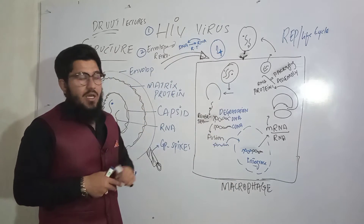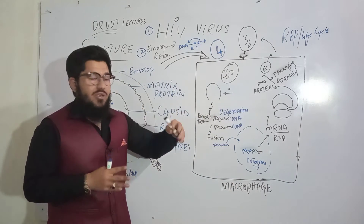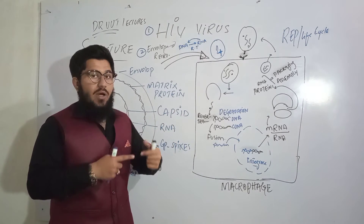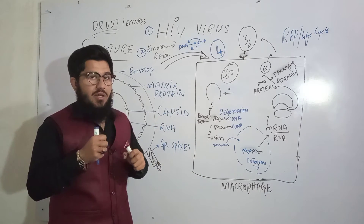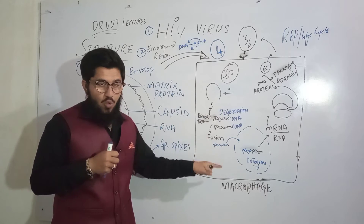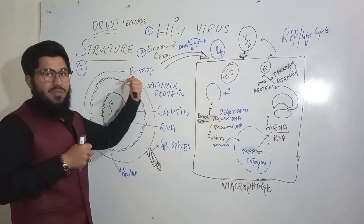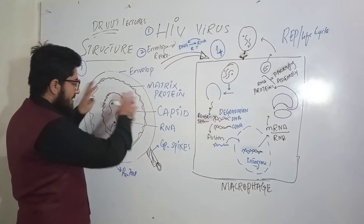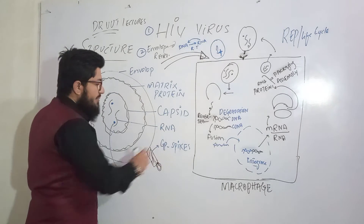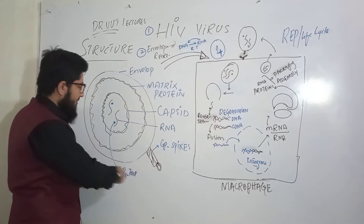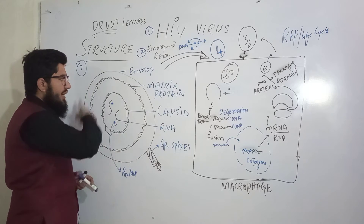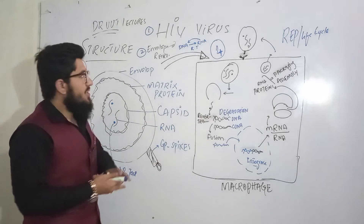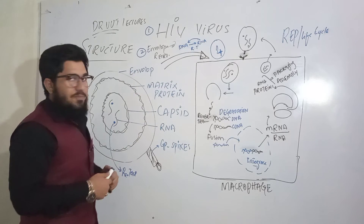When the virus enters the host cell and replicates, as it moves back out, it takes the membrane from the host cell — and that is the envelope, a lipid bilayer. On the outer surface, there are GP spikes — glycoprotein spikes — covering the entire outer surface of this enveloped RNA retrovirus.